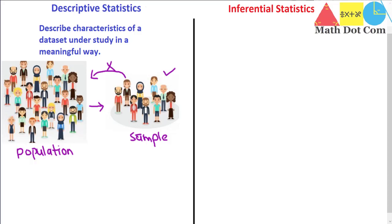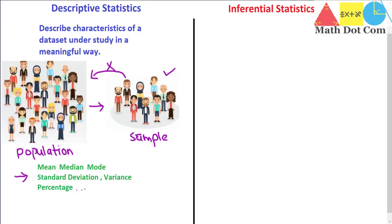So how do we do the descriptive statistics? We have methods for that. These are the different methods we will use in descriptive statistics for analyzing the given sample and making the data more meaningful: mean, median, mode, standard deviation, variance, percentages, and so on. These are a few methods — just for your clarity — of what methods you can use in descriptive statistics in order to analyze the given sample.